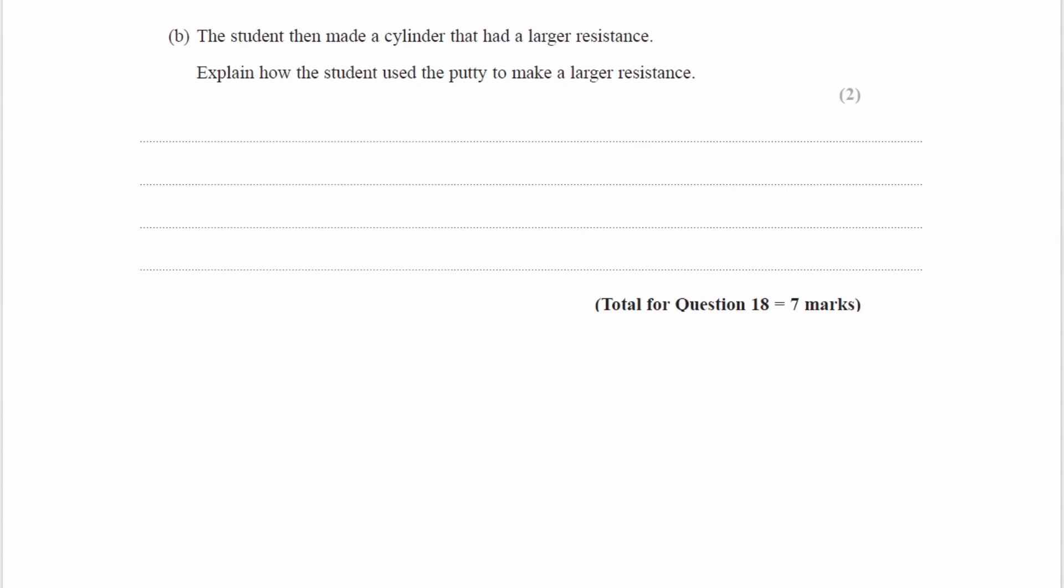So for the next part, we have the student then made a cylinder that has a larger resistance. Explain how the student used the putty to make a larger resistance. We know our equation is resistance is equal to resistivity times length over area. So we're using the same putty as before, so we can't change the resistivity. The resistivity is a material property. If we're not changing the putty, we're not changing the material, and therefore we're not changing the resistivity.